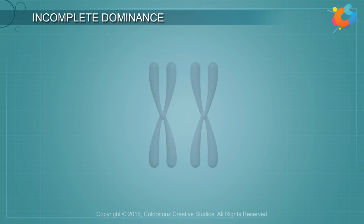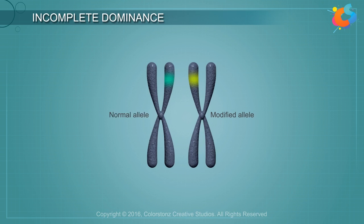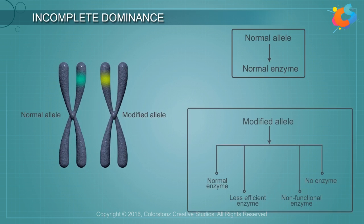Take the example of a gene that contains the information for producing an enzyme. There will be two allelic forms responsible for its production. The normal allele produces the normal enzyme. But the modified allele could be responsible for producing a less efficient enzyme, a non-functional enzyme, or no enzyme at all.